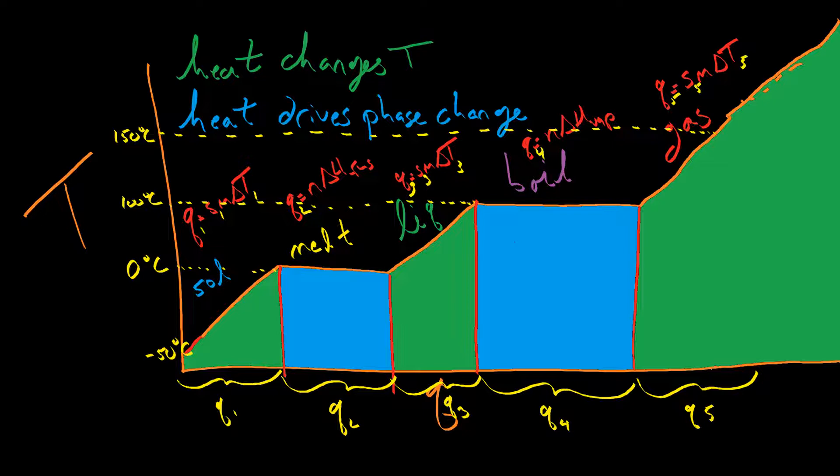And, then, how much energy does it take to raise the temperature of the, now, steam, the gaseous water? So, each of the places where the temperature changes, it's Q equals S, M, delta T. The temperature change varies from one step to the next. The heat capacity varies from one step to the next, because solid ice has a different heat capacity from liquid water, has a different heat capacity from gaseous steam. Different phases, different ways of taking that energy in and storing it.